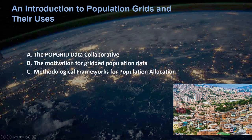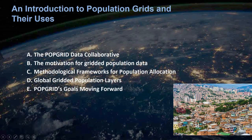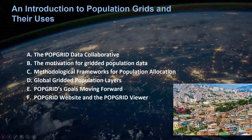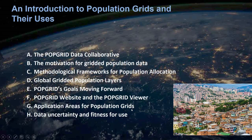We will talk about methodological frameworks for population allocation and the creation of final data products. We will give you an overview of existing global gridded population layers that are open to the user community. We will discuss PopGrid's goals moving forward, give a short tour of PopGrid's website and the PopGrid Data Viewer, provide insight on application areas where population grids are useful, and conclude with comments on data uncertainty and fitness for use.